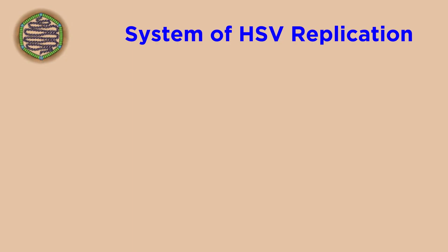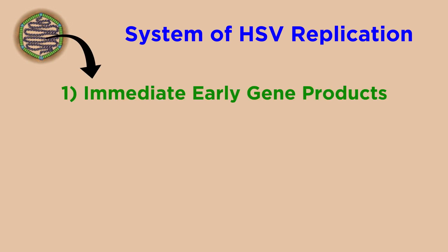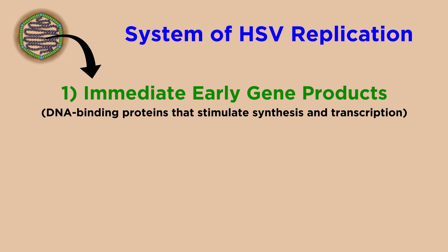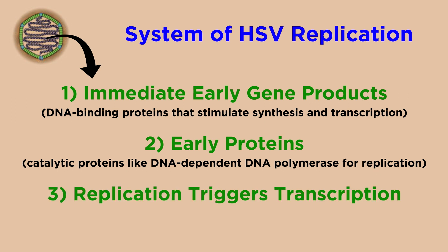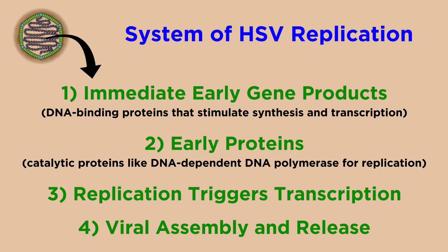HSV has evolved a very sophisticated and stepwise system to replicate itself. The first things created are the immediate early gene products, including DNA-binding proteins that help stimulate DNA synthesis and transcription. Next are the early proteins, which include catalytic proteins like DNA-dependent DNA polymerase to kickstart DNA replication. Replication of the viral genome then triggers transcription of genes encoding structural proteins, and the virus is assembled piece by piece before being released by exocytosis or cell lysis.